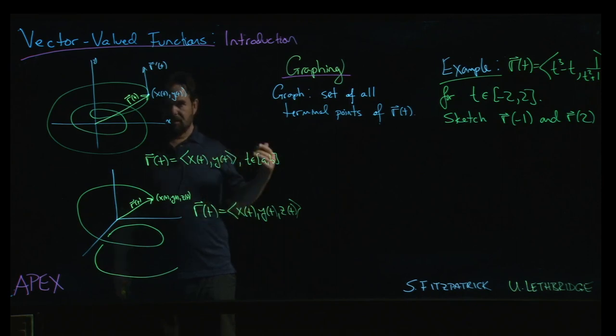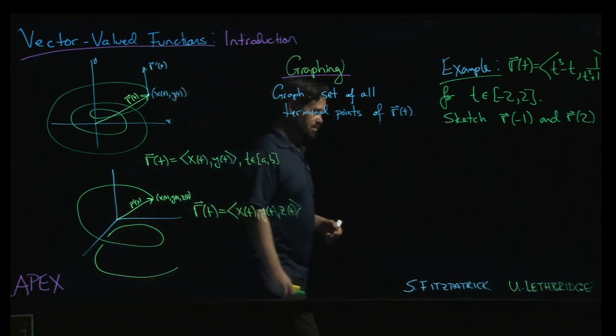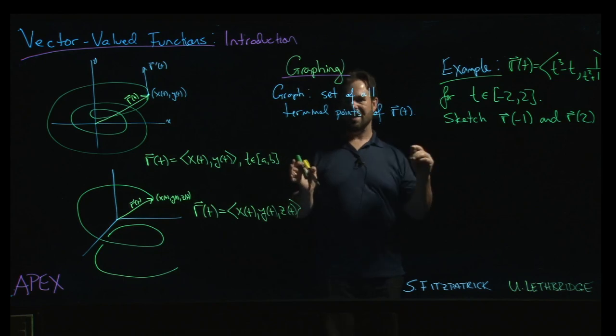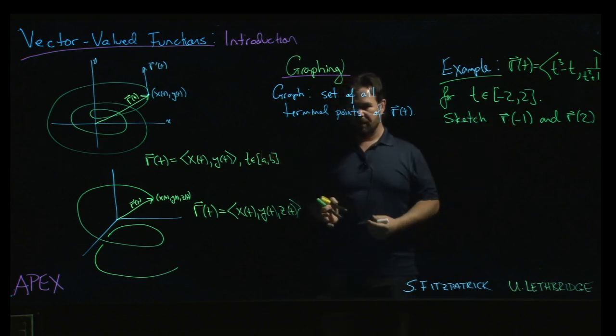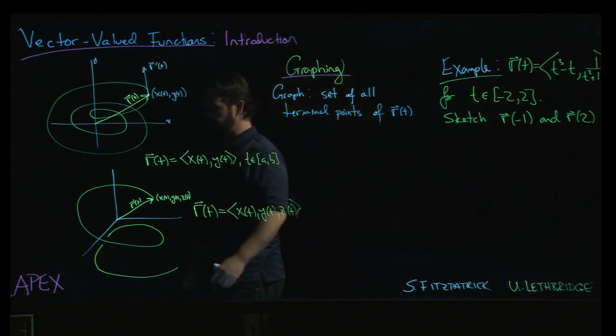Now, that's easier said than done. This is not really something that maybe a human should be attempting. We can't draw a reasonable number of vectors. We're not going to be able to draw enough vectors to give us a good sense of what the curve looks like.